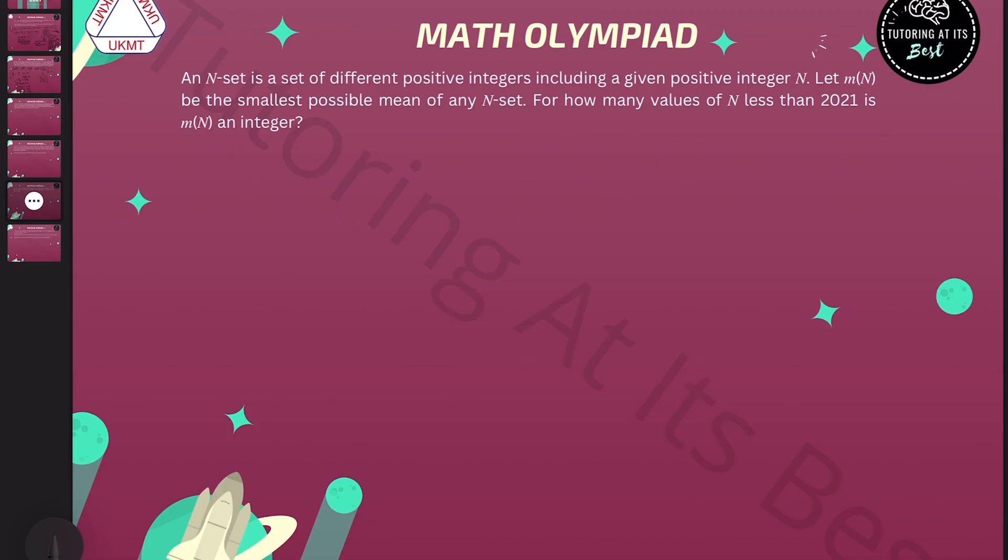Problem five: An n-set is a set of different positive integers including a given positive integer n. Let m(n) be the smallest possible mean of any n-set. For how many values of n less than 2021 is m(n) an integer?